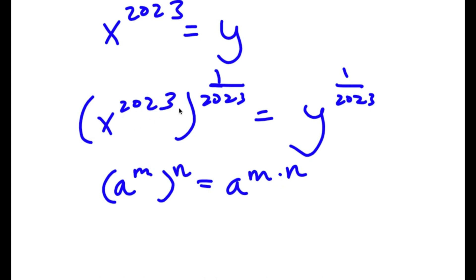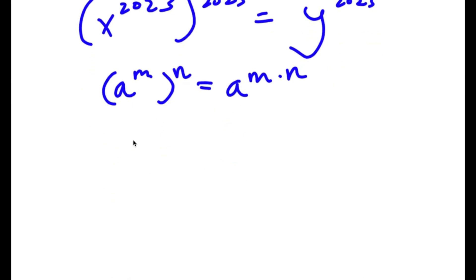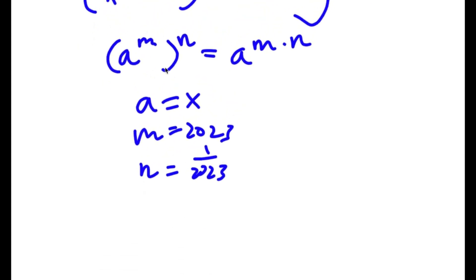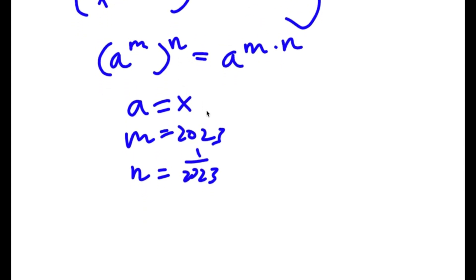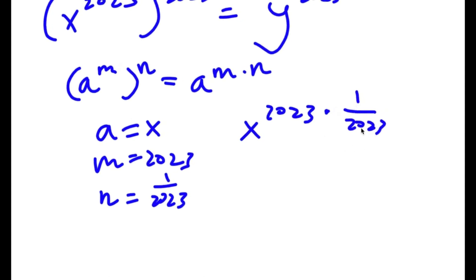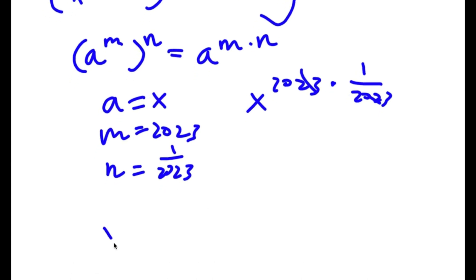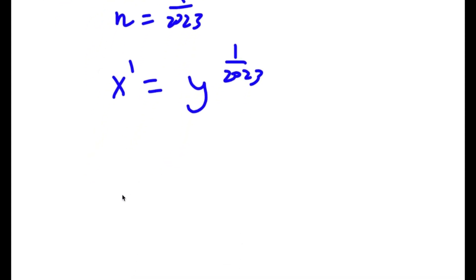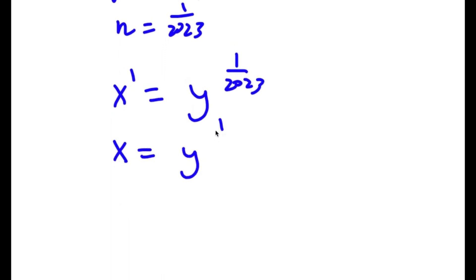So x to the power of 2023 to the power of 1 over 2023 — here a equals x, m equals 2023, and n equals 1 over 2023 — gives us x to the power of 2023 times 1 over 2023. Since 1 over 2023 is the reciprocal of 2023, they cancel out, giving 2023 divided by 2023 equals 1. So I am left with x to the power of 1, which is just x, equal to y to the power of 1 over 2023.